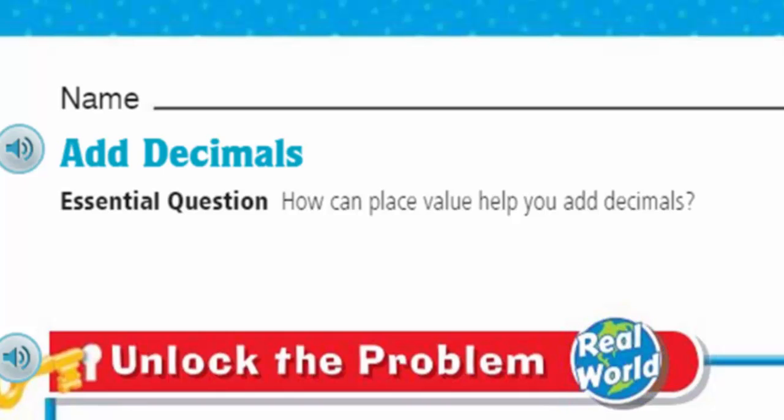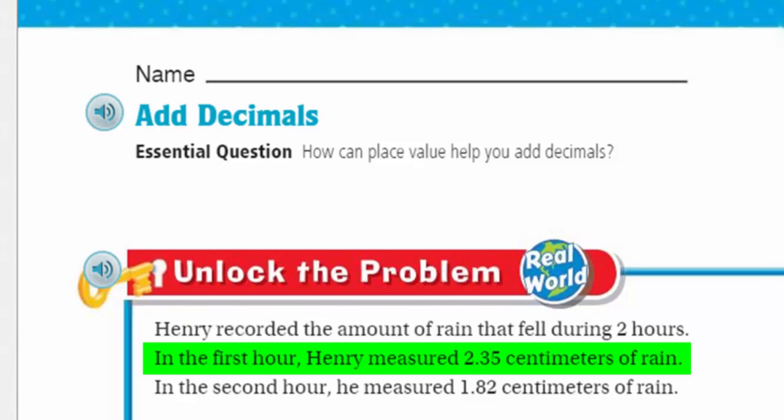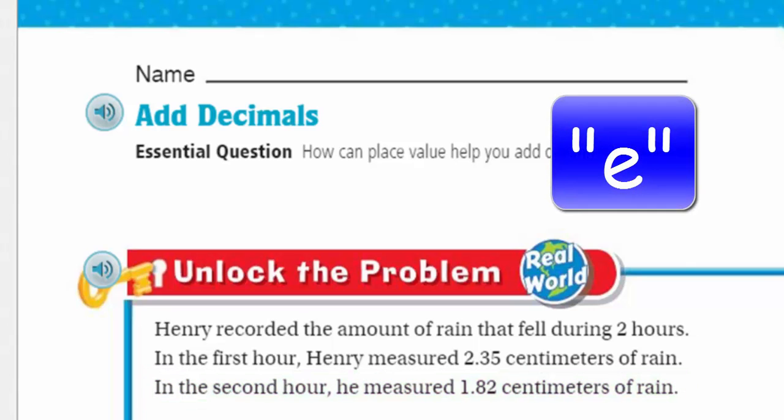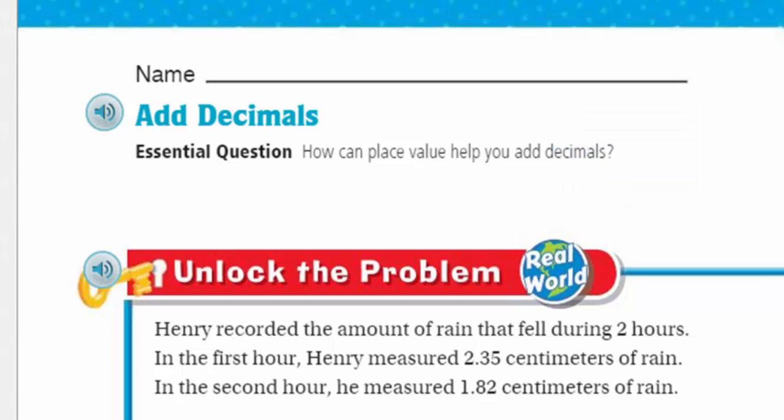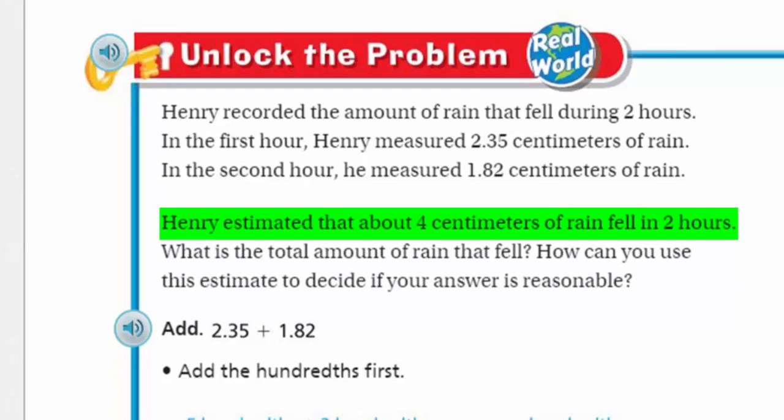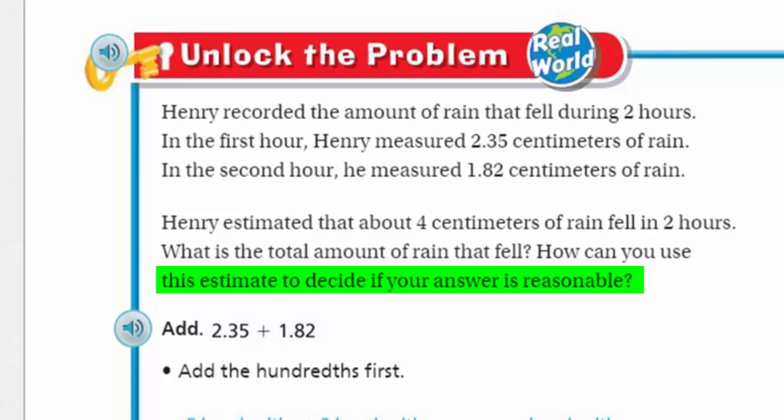That's right, my friends. Real world. It says Henry recorded the amount of rain that fell during two hours. In the first hour, Henry measured 2.35 centimeters of rain. In the second hour, he measured 1.82 centimeters of rain. Makes me ask: how did he measure it? Like this problem is saying that he measured it, but to which decimal place is Henry measuring it? We can see that the digits go to the hundredths place, so it's going to be in the hundredths. That's right, hundredths of a centimeter.